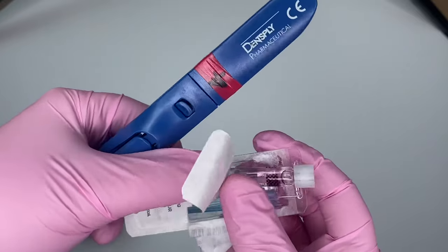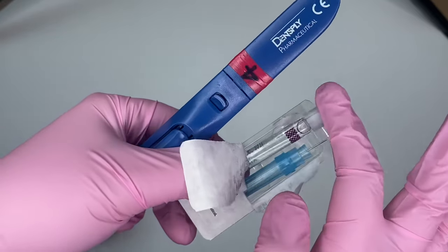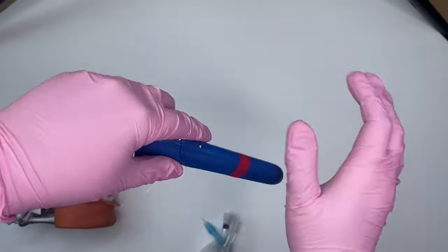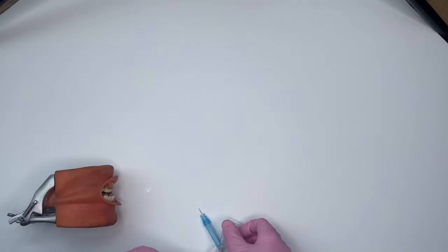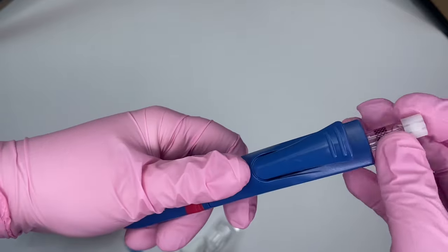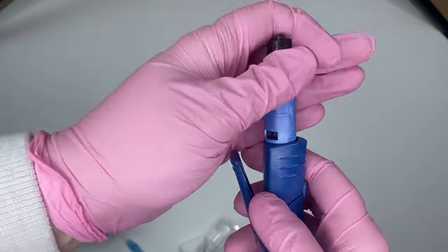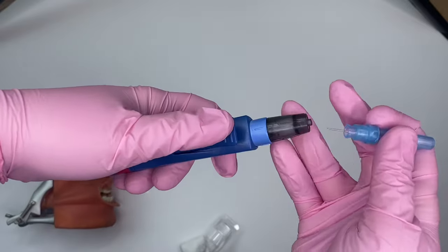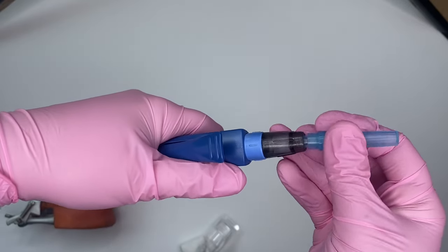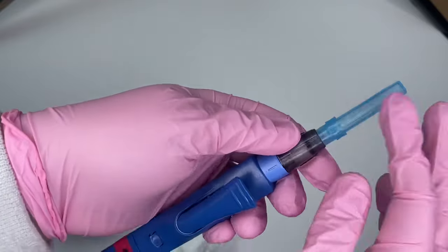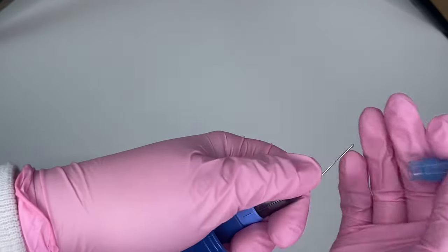They come in blister packs with the anesthetic and applicator. First, you place the cartridge in here, tighten it up, and then place this applicator tip - it's not really a needle and I'll show you why. When you take the cap off,